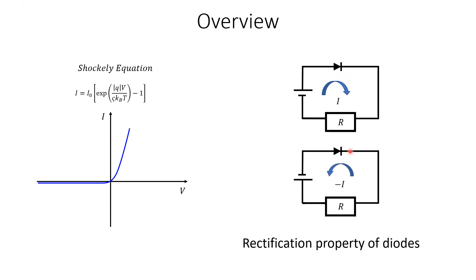But if the voltage is higher on the n-side than on the p-side, we operate in a region of very, very low current — a condition we call reverse bias. In this condition, the junction behaves essentially as an open circuit. This is usually called the rectification property of diodes: the current in reverse bias is very low, but the junction conducts very well in forward bias. So it behaves as a short circuit in forward bias and as an open circuit in reverse bias.